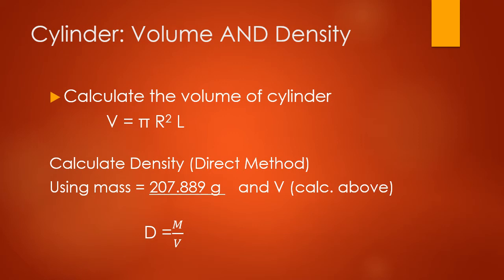To calculate the volume of a cylinder, we use the equation pi r squared l. We have l for length, which we measured with the calipers. But we have r squared — the radius — and we didn't measure the radius, we measured the diameter. So to find r, take the diameter and divide it by two, because the radius is half of the diameter. Once you calculate the radius using the correct sig figs, plug it into the equation along with the length and pi. Taking radius squared — centimeters squared — multiplied by the length in centimeters still gives units of centimeters cubed.